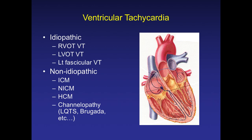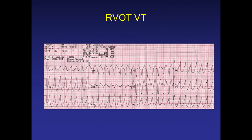Ventricular tachycardia can be classified by etiology into idiopathic and non-idiopathic. Idiopathic types include RVOT, left ventricular outflow tract, and fascicular VT. Non-idiopathic types include ischemic VT, non-ischemic, hypertrophic cardiomyopathy, and channelopathies — which depend on genetic mechanisms such as long QT syndrome or Brugada syndrome. For RVOT VT, the ECG shows left bundle branch block morphology, indicating right-sided origin.